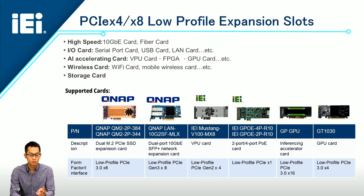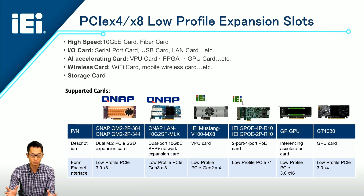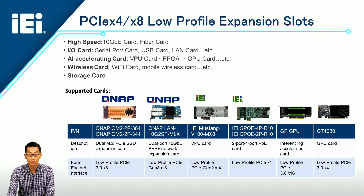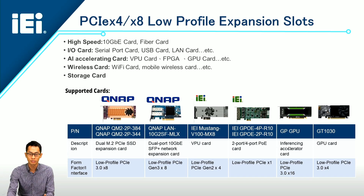The Flex series supports 2 PCIe Gen3 x4 and x8 slots, compatible with low-profile add-on cards. There are multiple choices of QNAP, IEI, and NVIDIA accessory cards. The QNAP M.2 PCIe SSD can enlarge your storage capacity, and the 10G Ethernet card speeds up data transmission. The IEI Mustang V100 is a VPU card solution for video processing. We also have a GPU-e add-on card that can empower connected devices without a separate power supply, and NVIDIA GPU cards such as GT 1030 or 1050 are also adaptable inside the Flex series.